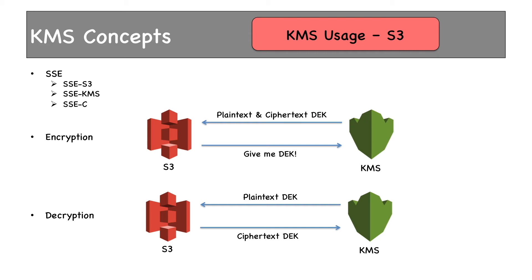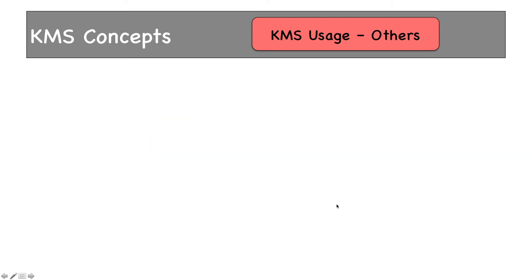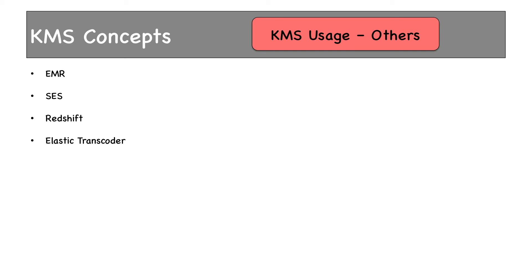There are other resources that also use AWS KMS services, such as EMR (Elastic MapReduce), Simple Email Service, Redshift Cluster, and Elastic Transcoder. All these services also use AWS KMS.